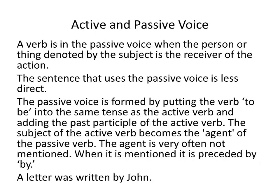A verb is in the passive voice when the person or thing denoted by the subject is the receiver of the action. The sentence that uses the passive voice is less direct. The passive is formed by putting the verb 'to be' into the same tense as the active verb and adding the past participle of the active verb. The subject of the active verb becomes the agent of the passive verb. The agent is very often not mentioned; when it is mentioned, it is preceded by 'by' and placed at the end of the clause.